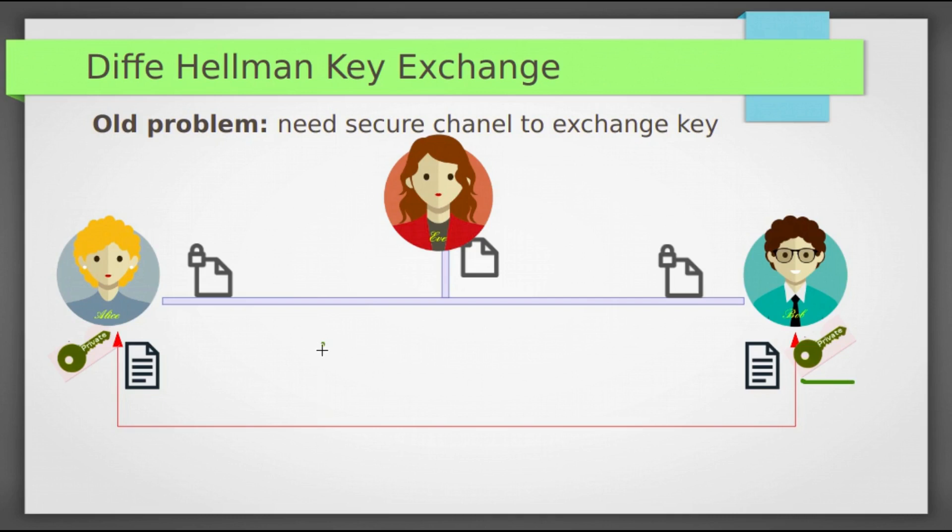In 1997, it was revealed that James Ellis, Clifford Cocks, and Malcolm Williamson of GCHQ, British intelligence agency, had previously shown this in 1969. How public key cryptography could be achieved? In 2002, Hellman suggested that algorithm to be called Diffie-Hellman-Merkle key exchange because this Diffie-Hellman is inspired by Merkle's puzzle.